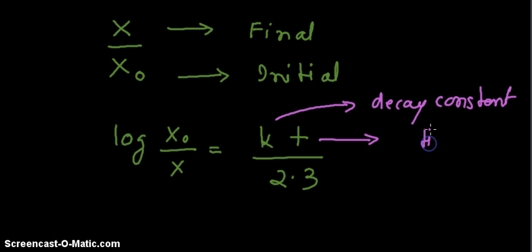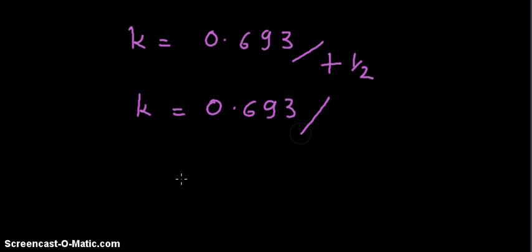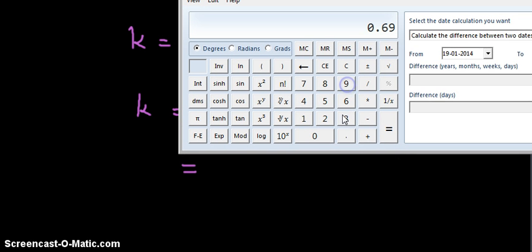T is the time. Using the information given regarding the half-life, we will first find the value of K and then substitute it in the above equation. K is equal to 0.693 divided by the half-life. Plugging in the value of half-life, that is 60 days, we get K equal to 0.693 divided by 60.